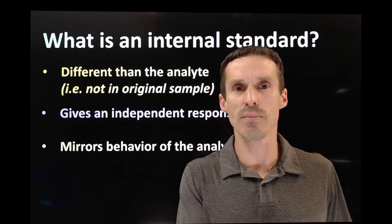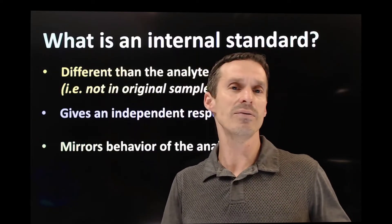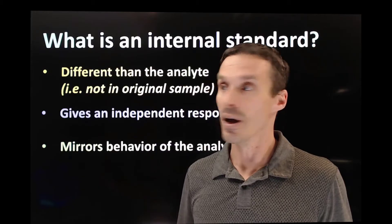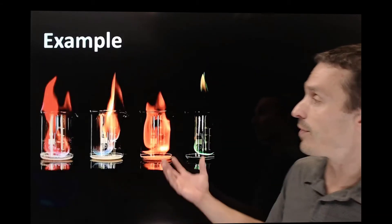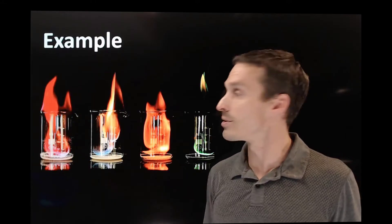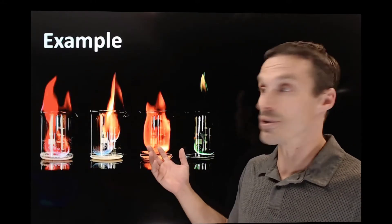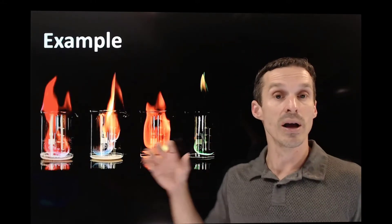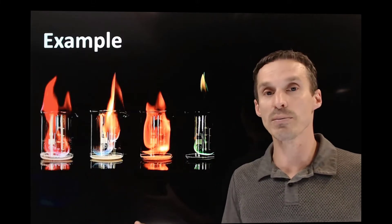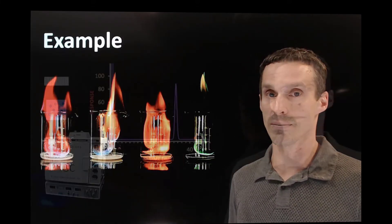They don't have to be the same molecule, but they have to be very close to one another. A good example of that would be like if we're doing the flame test, the metal analysis. Maybe we're looking for sodium, but you wanted to use copper as a similar analyte to work its way through the system.